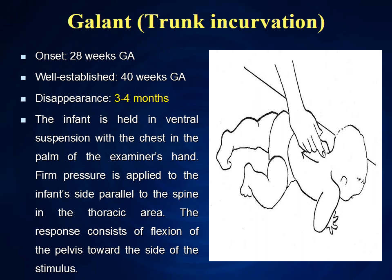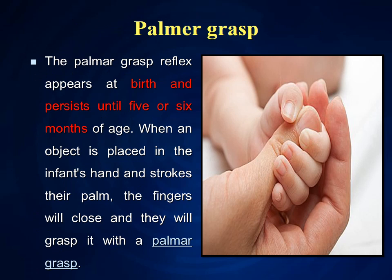Gallant reflex: onset 28 weeks of gestational age, well established at 40 weeks, disappears at about 3 to 4 months. The infant is held in ventral suspension with the chest in the examiner's palm; firm pressure is applied to the infant's side parallel to the spine in the thoracic area. The response is flexion of the pelvis toward the side of stimulus. The palmar grasp reflex appears at birth and persists until 5 to 6 months of age — when an object is placed in the infant's hand and the palm is stroked, the fingers close in a palmar grasp.